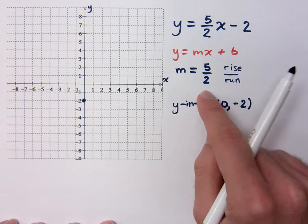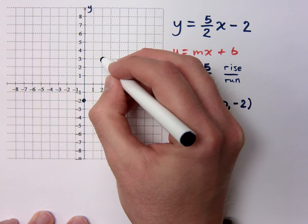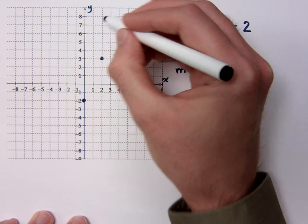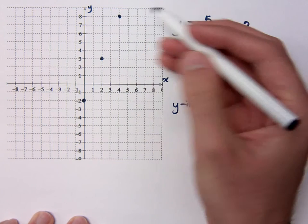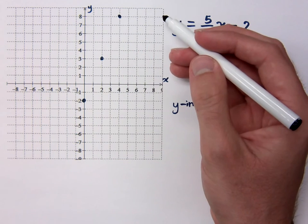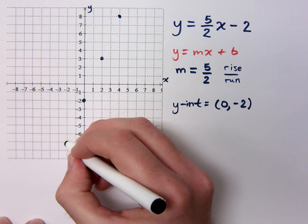So my slope is 5 over 2. So from this point, I'm going to go up 5 units and go over 2 units. Again, go up 5 and over 2. Now I'm out of space here, so I can always reverse that and go backwards. So let's go down 5 and to the left 2.